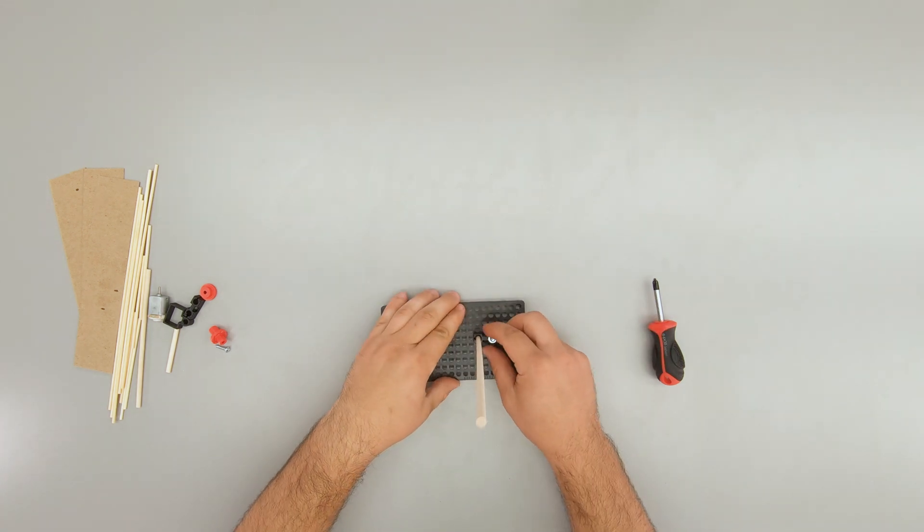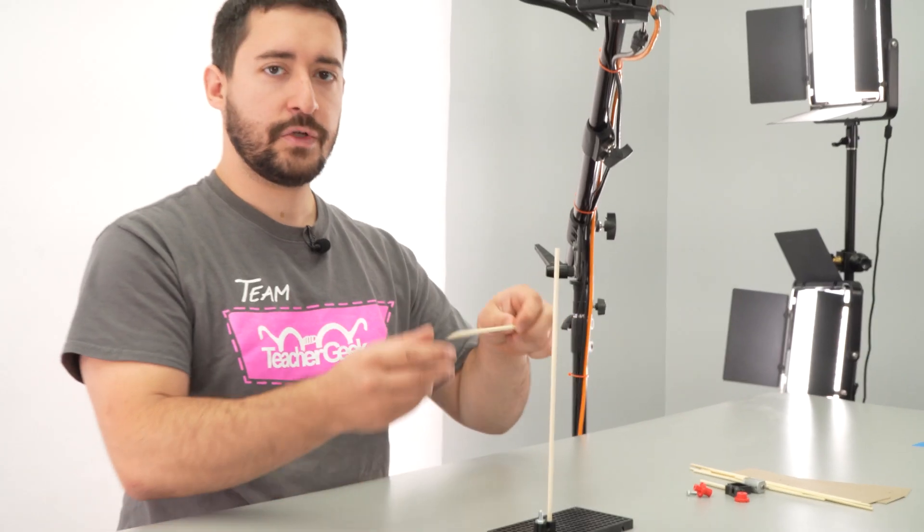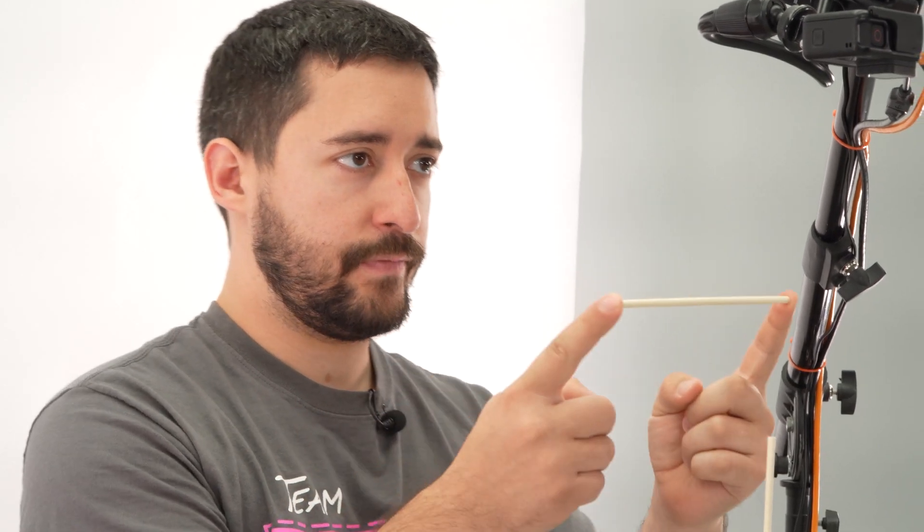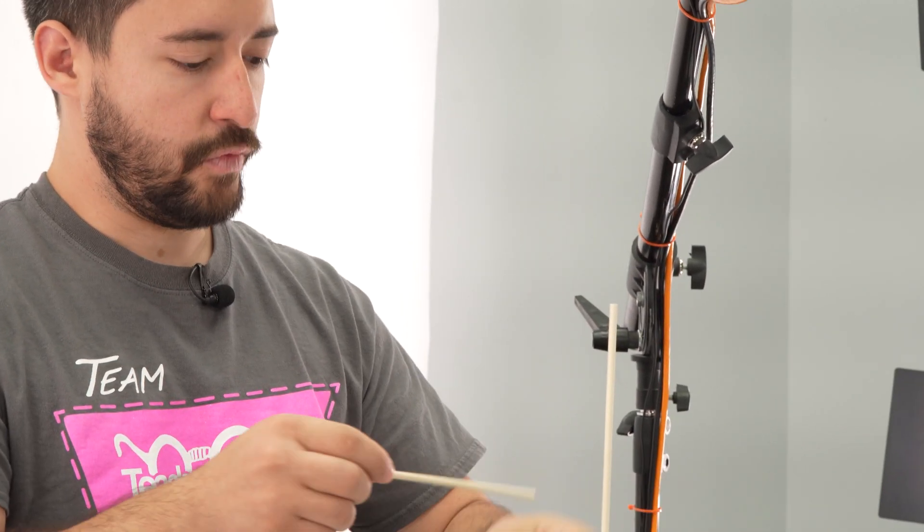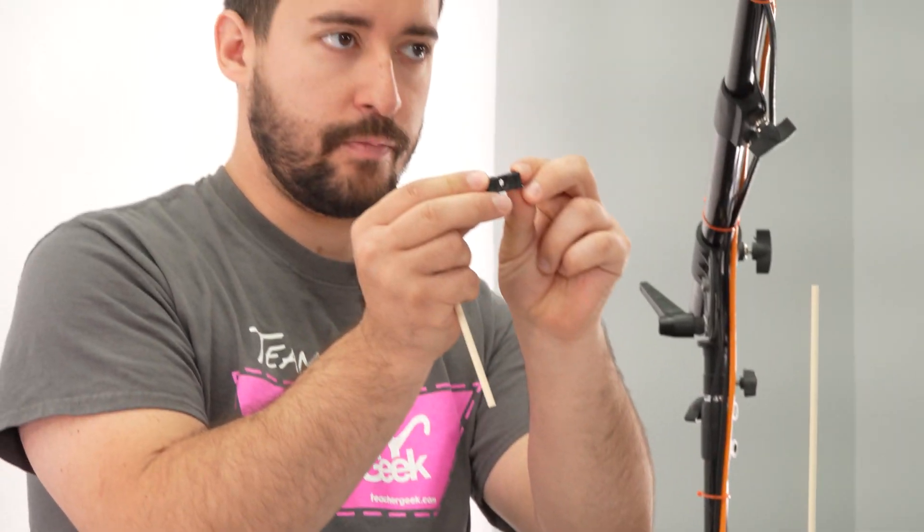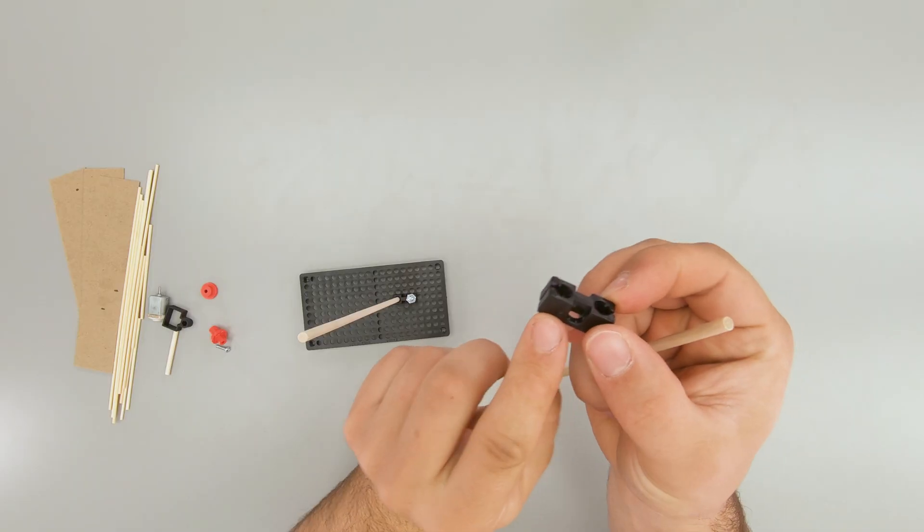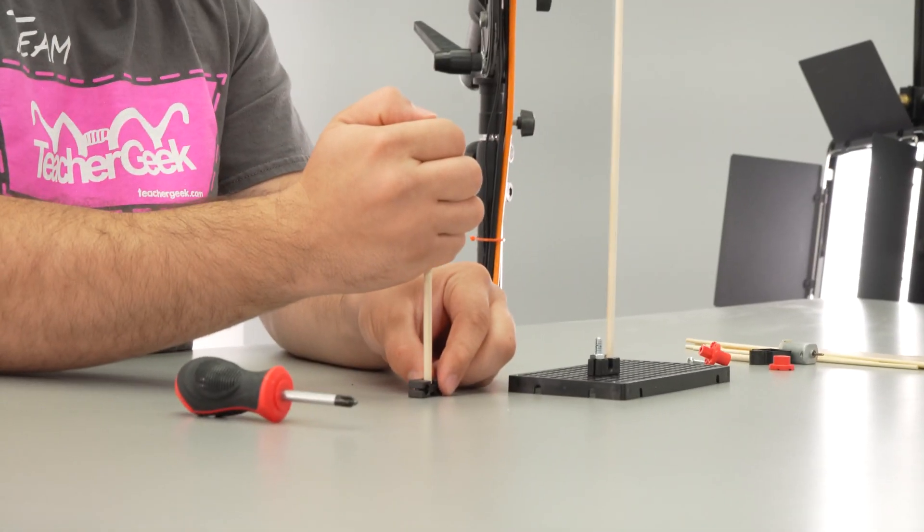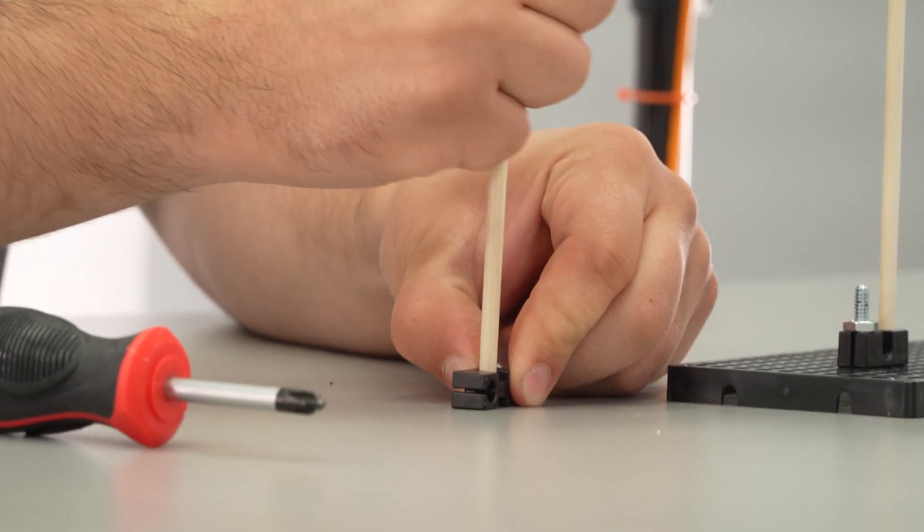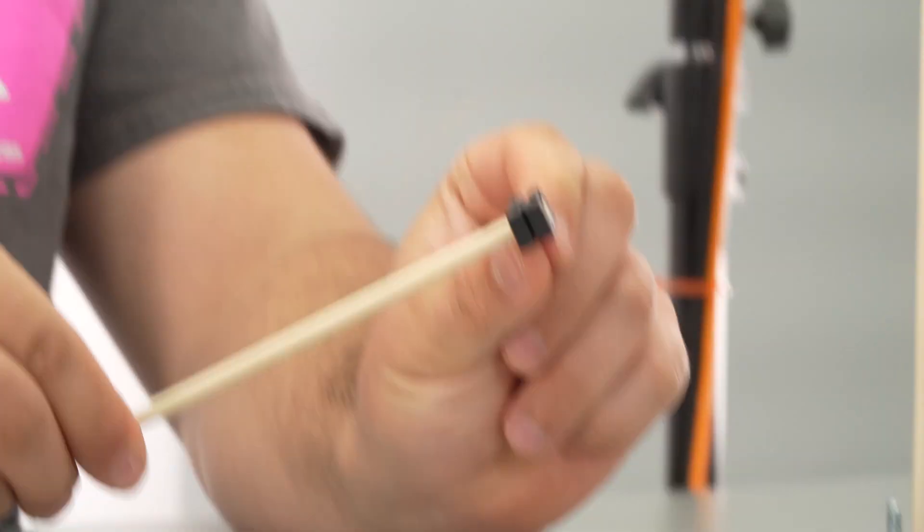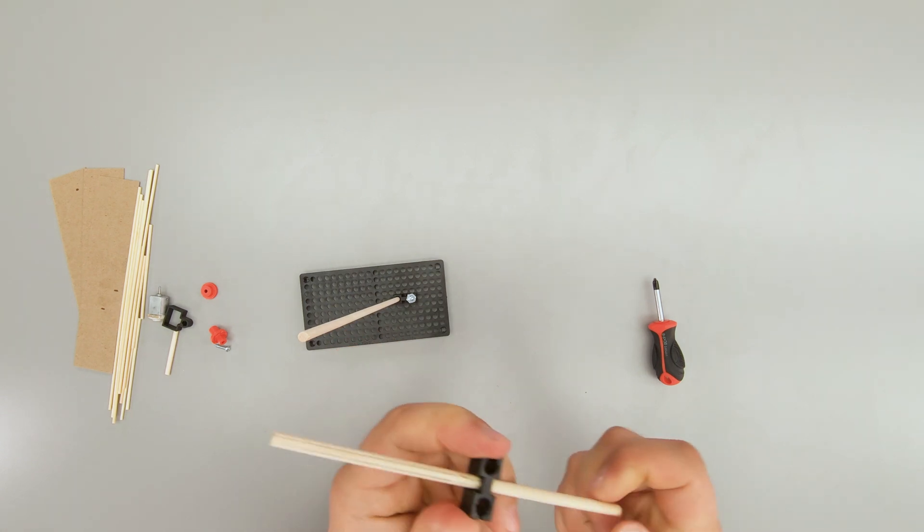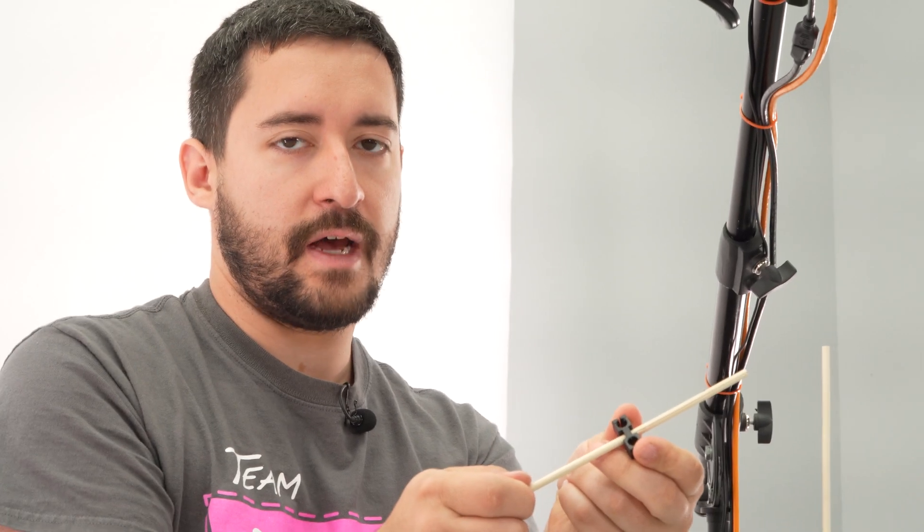Next we're going to take our 15 centimeter or 6 inch dowel, and wiggle that through the center hole of our other perpendicular block. This could be a little tricky, so I like to rest it on the table and then wiggle the dowel in. I'm going to continue pushing until the block is about halfway onto that dowel.